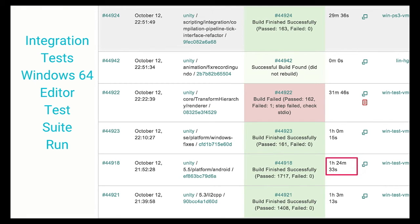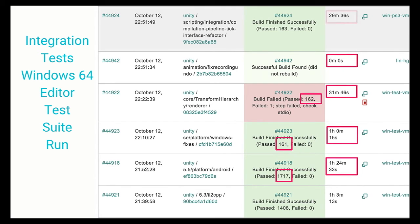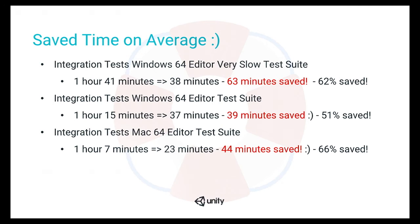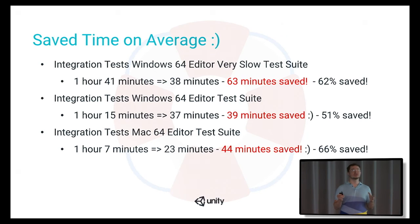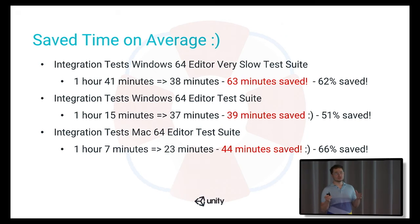Some results: we started with 1 hour 20 minutes and 1,700 tests, and went down to 30 minutes and 160 tests. We went down from 1 hour 40 minutes to 38 minutes and saved 63 minutes. But the best result is that for Mac tests, we went from 1 hour 7 minutes down to 23 minutes, saving 44 minutes — a 66% reduction.